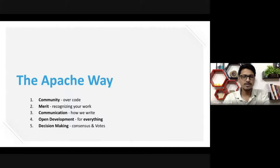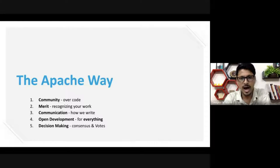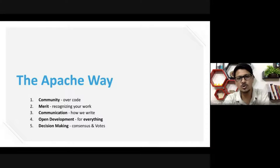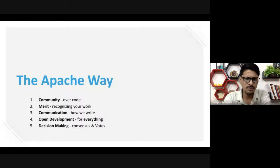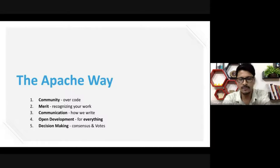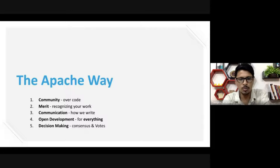Here comes today's topic: the Apache Way and how you can incorporate it into your open source project to make it grow and be successful. There are five fundamental pillars of the Apache Way: community, merit, communication, open development, and decision making.